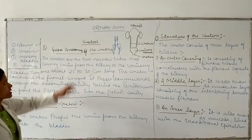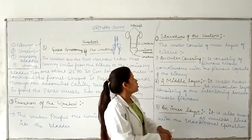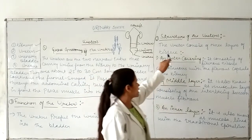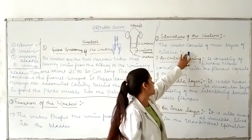This is gross anatomy. The structure of the ureter has three layers.